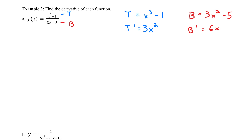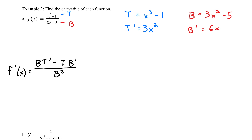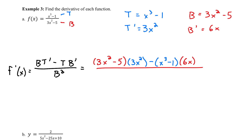When I look at my quotient rule formula using b and t, f prime of x equals — and I even have to say the rhyme to remember it — low d high, minus high d low, square the bottom, away we go. So we start with b, which is 3x squared minus 5, times t prime, which is 3x squared, minus t, which is x cubed minus 1, times b prime, which is 6x, all divided by 3x squared minus 5, quantity squared.